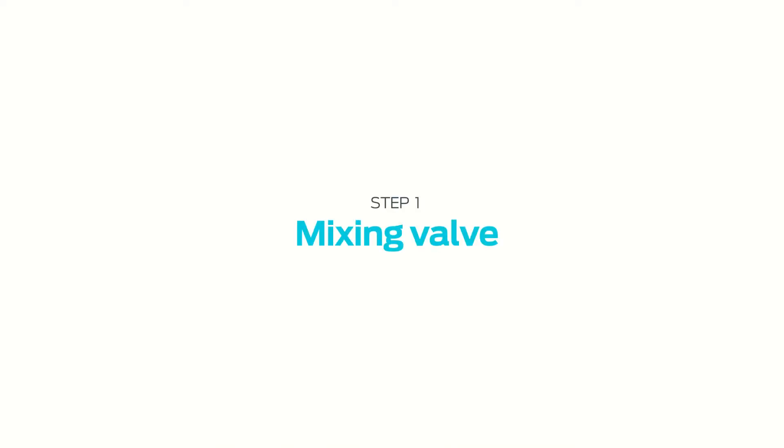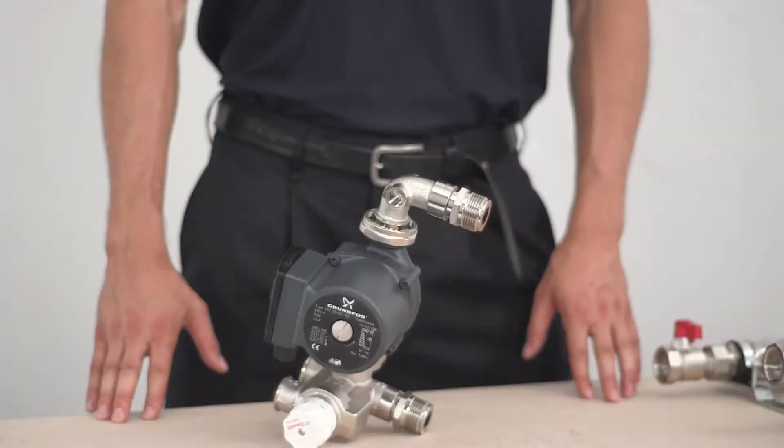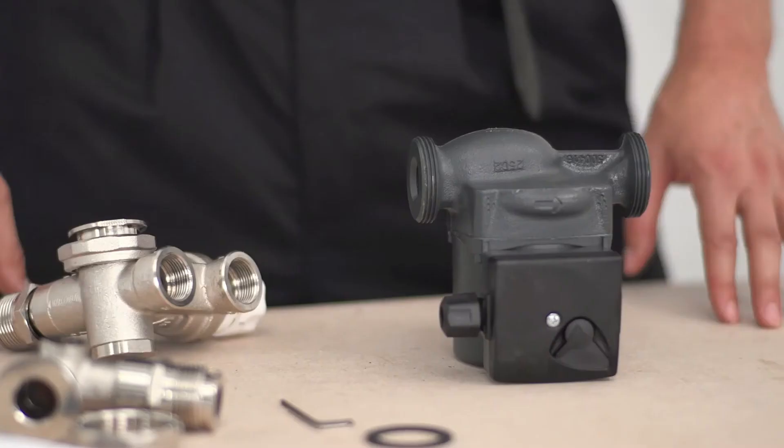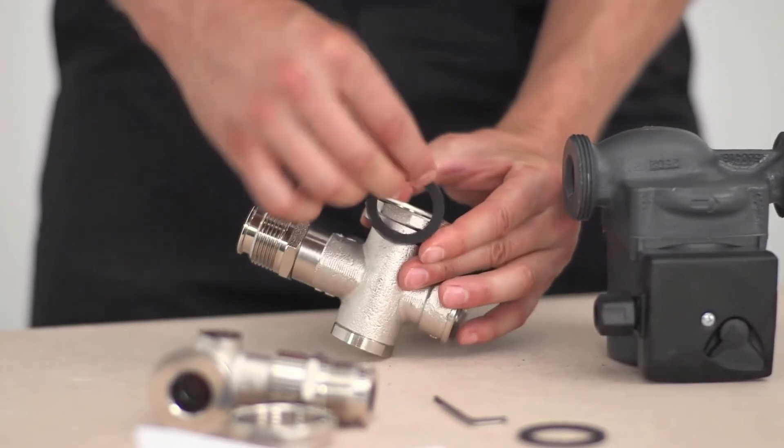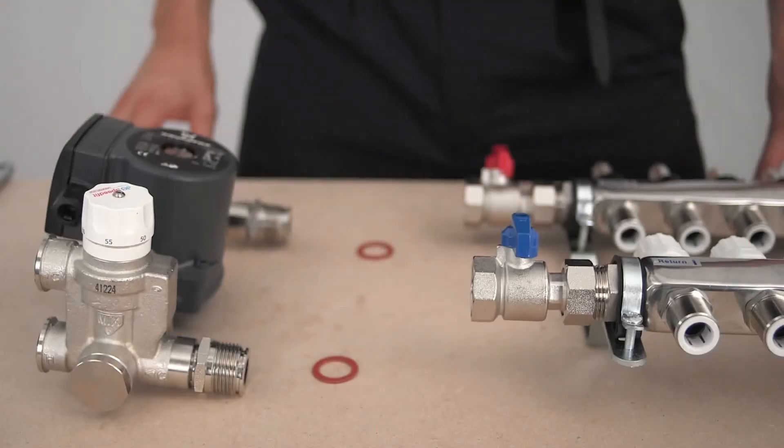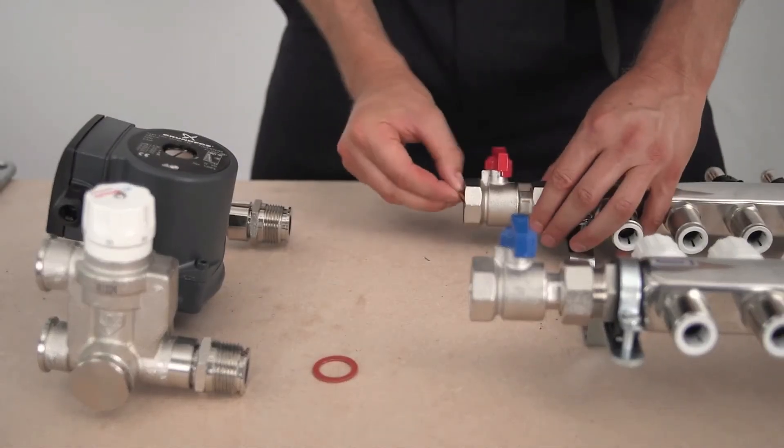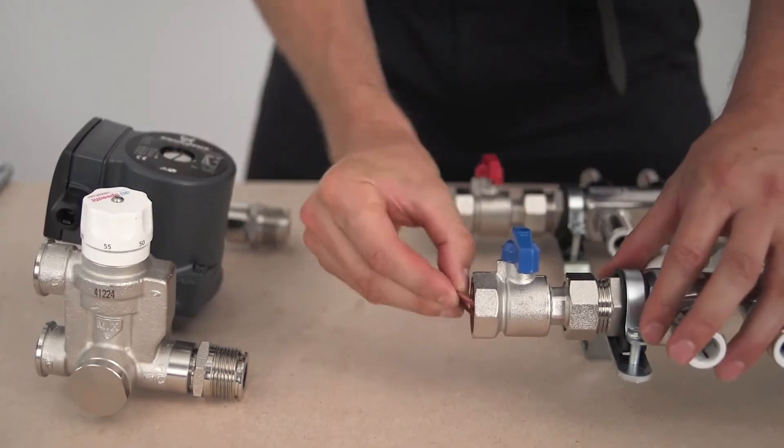The mixing valve. The JG control unit comprises a pump and an adjustable blending valve at the bottom. Because the water is too hot to be fed into the floor unblended, the manifold is coupled with a JG control unit.